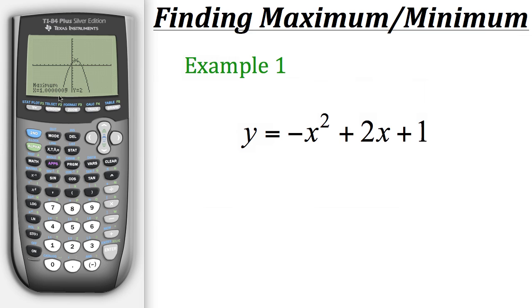But for some reason the calculator will sometimes get an odd decimal. So now that we've done that we know the maximum for this particular equation occurs at the point 1, 2.